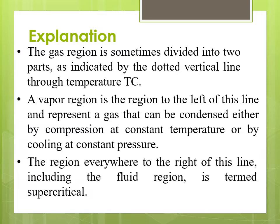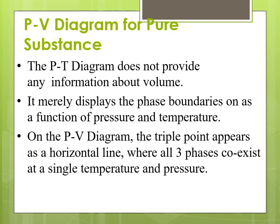The gas region is sometimes divided into two parts, as indicated by the dotted vertical line through the critical temperature Tc. The vapor region is to the left of this line and represents gas that can be condensed either by compression at constant temperature or at constant pressure. The gas region is reached after the critical point and the vapor region is reached after the triple point. The region everywhere to the right of this line, including the fluid region, is termed as the supercritical region.